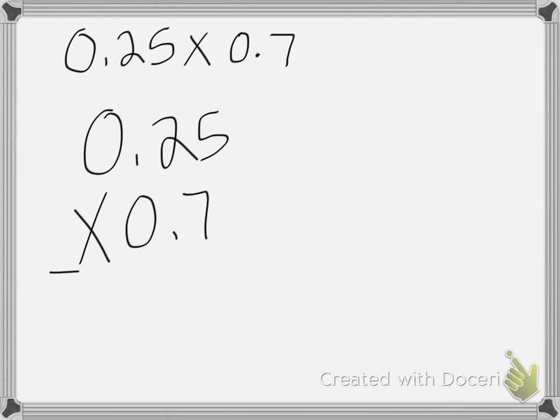Now when you multiply decimals, you can just ignore the decimal point to start with. We're just going to multiply like you would any other number. Don't worry about the decimal point. We'll do that at the end. So 7 times 5 is 35, carry my 3. 7 times 2 is 14, plus 3 is 17. This is where we worry about the decimal point. I've got my answer.